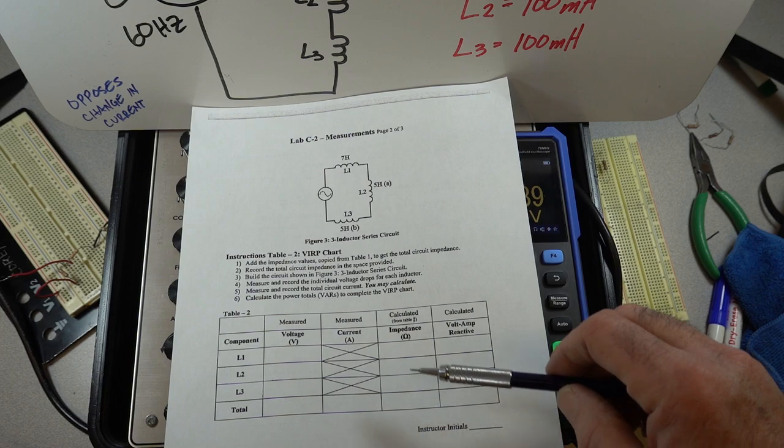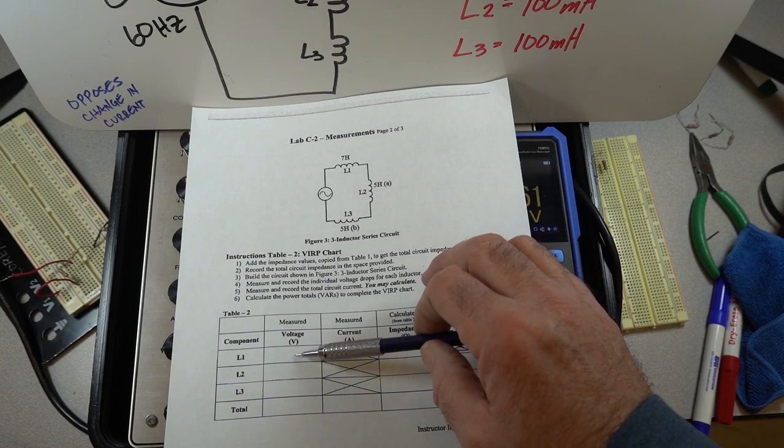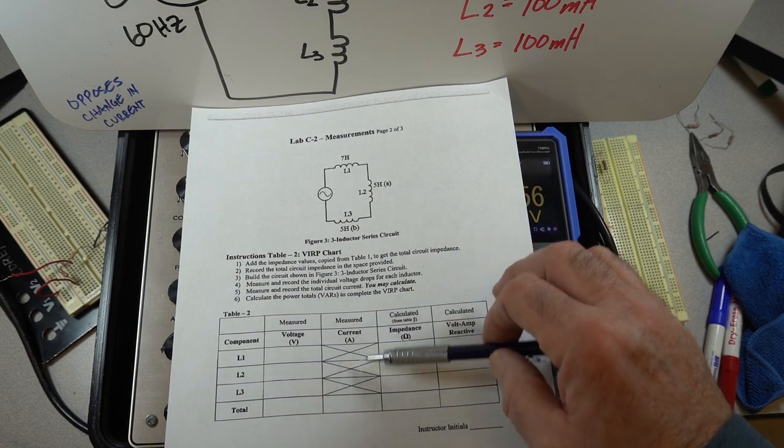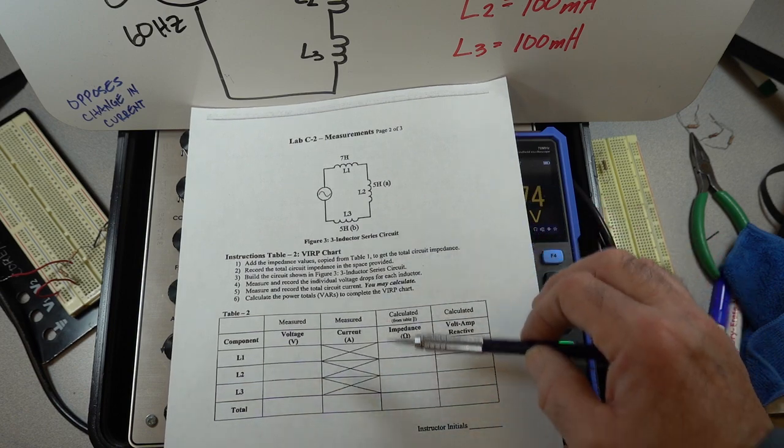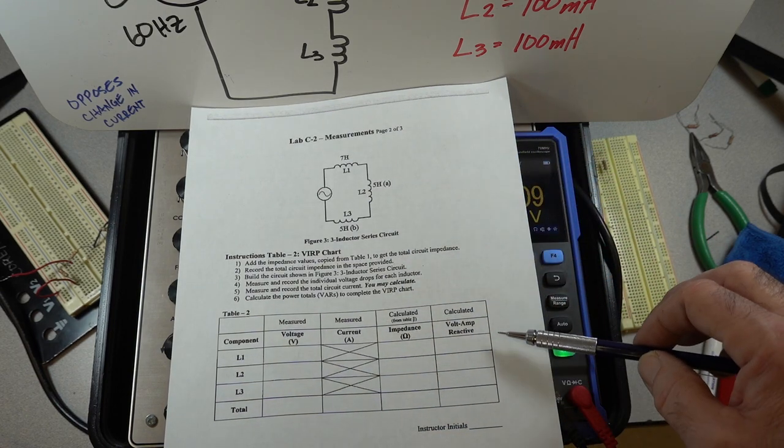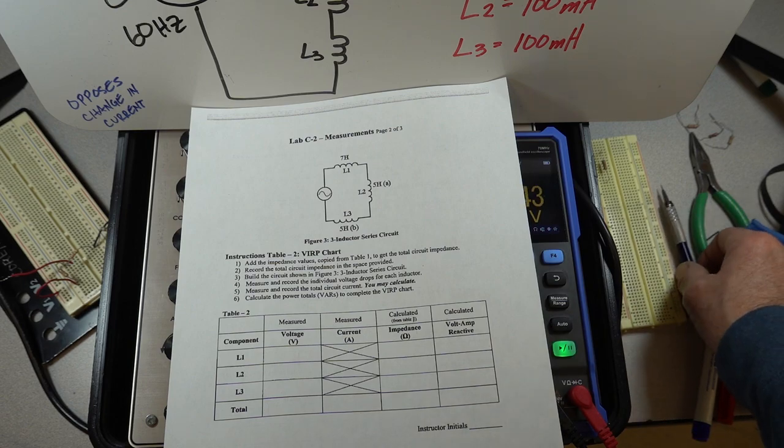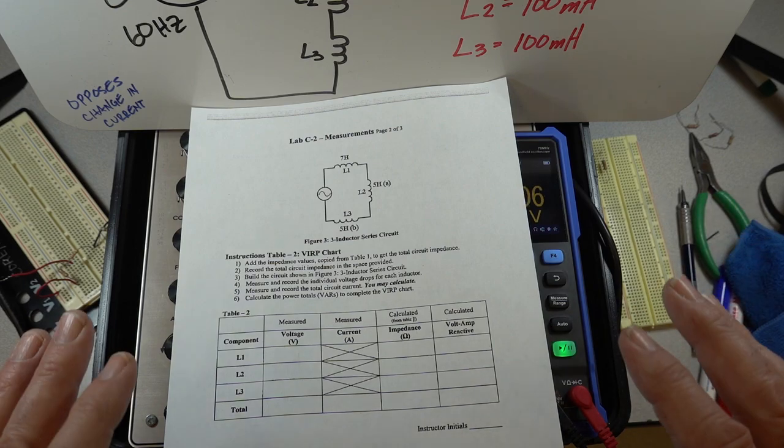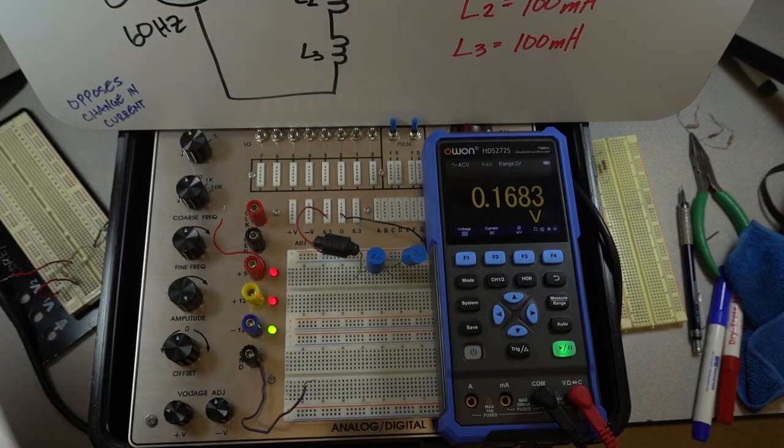Then you're going to transfer that impedance information right here where it says table 2, but here should say table 1. Then what you're going to do is look at your voltages, measure your voltage drops, and measure your total current in your series circuit. Then you can calculate what the power output is going to be on that particular deal. So that's what you're going to do on that.